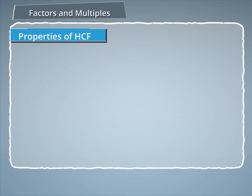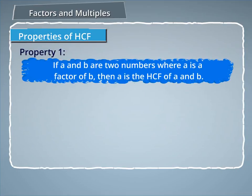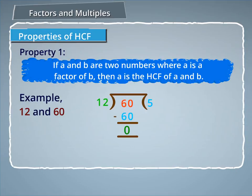Let us discuss some properties of HCF. Property 1: If A and B are two numbers and A is a factor of B, then A is the HCF of A and B. For example, for the numbers 12 and 60, since 12 is a factor of 60, the HCF of 12 and 60 is 12.